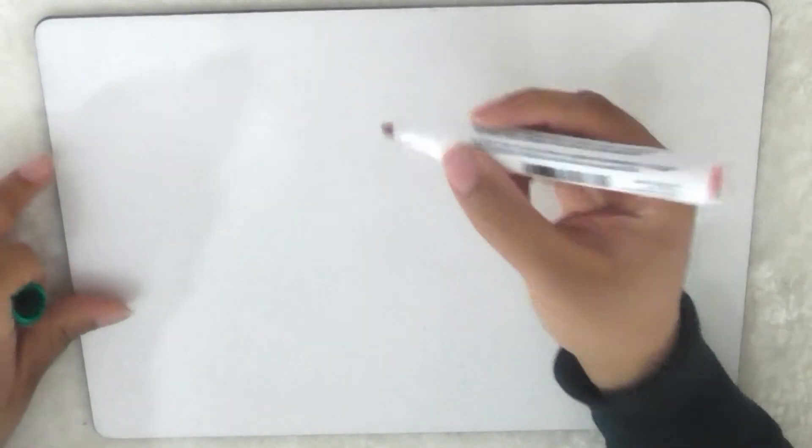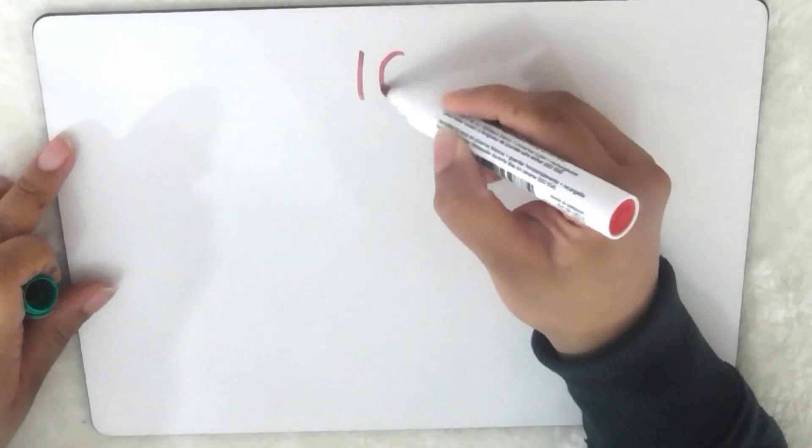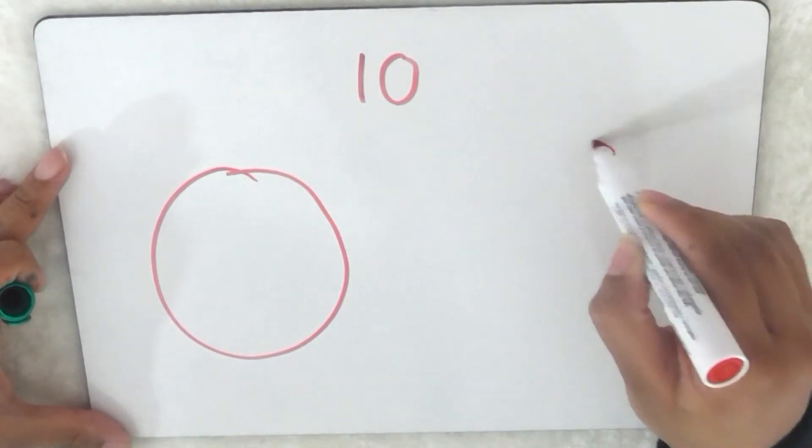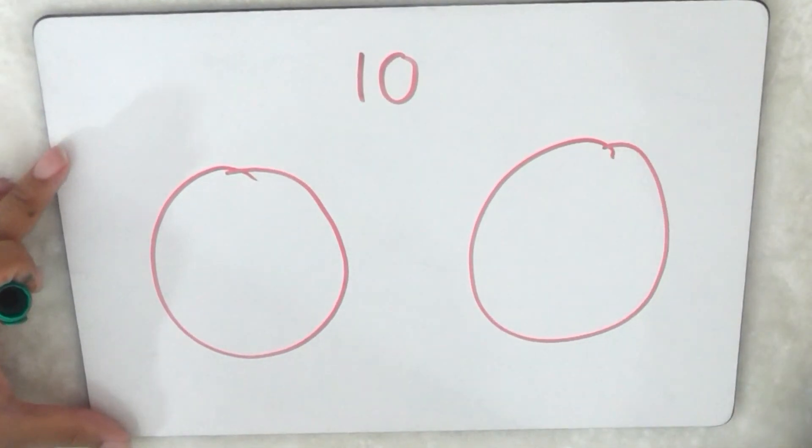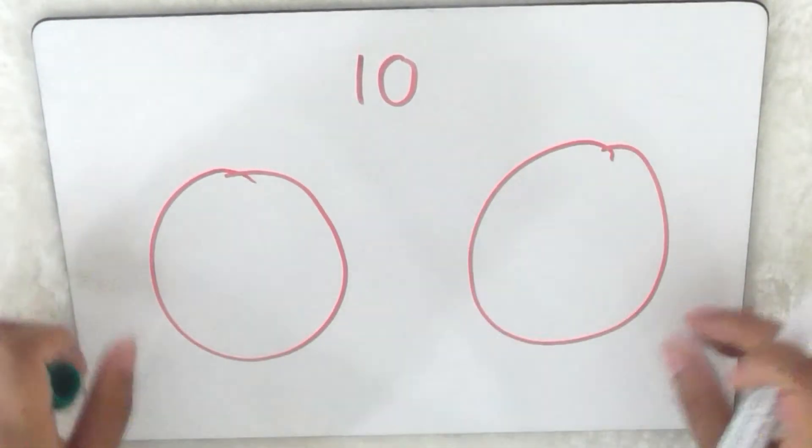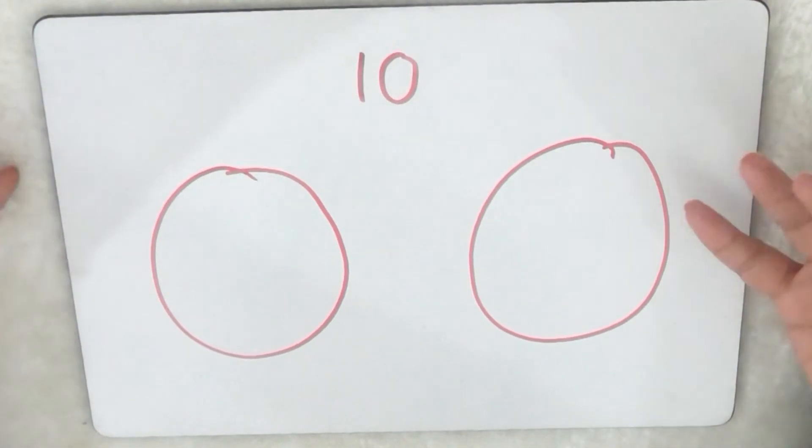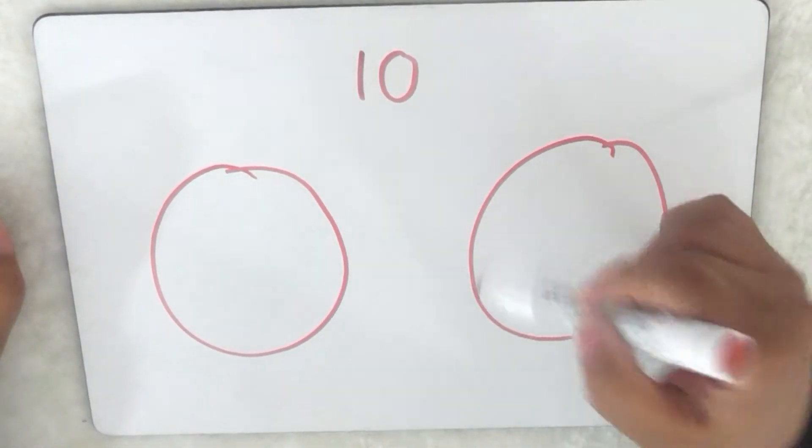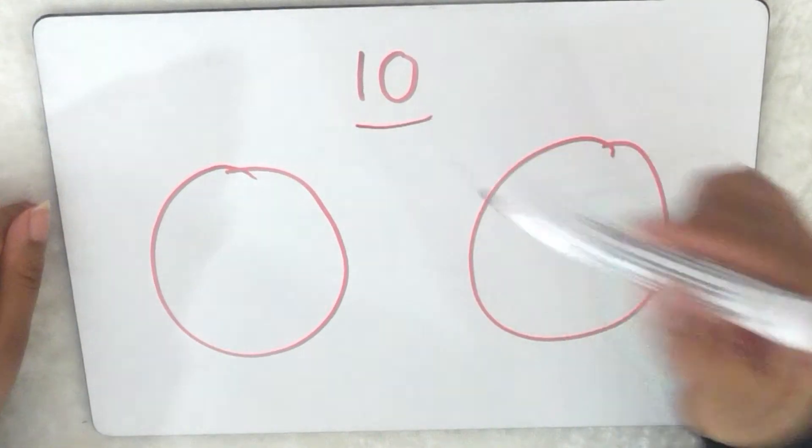Hi everyone, so today I'm going to be showing you how to halve using sharing circles. So if I had the number 10 over here and I'm going to draw two sharing circles, one and two, you can use 10 counters if you like or you can draw out 10, that's completely up to you. I'm just going to show you how I would do it on a whiteboard. So I have 10 and I need to share it between two to find out what half of 10 is.